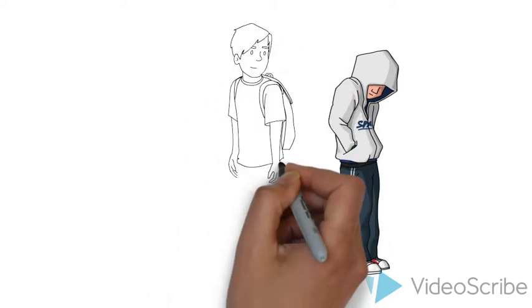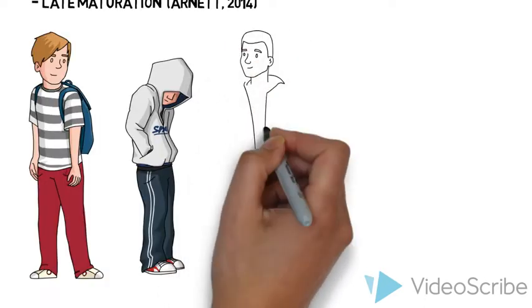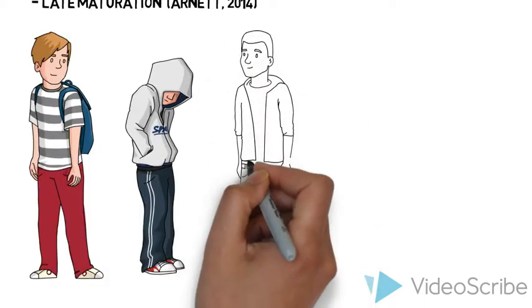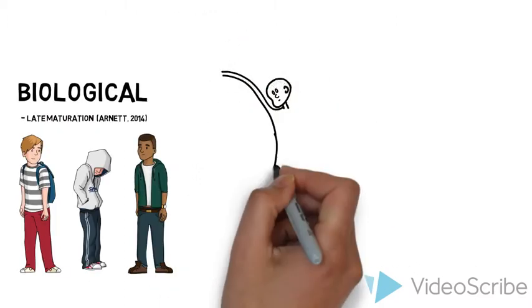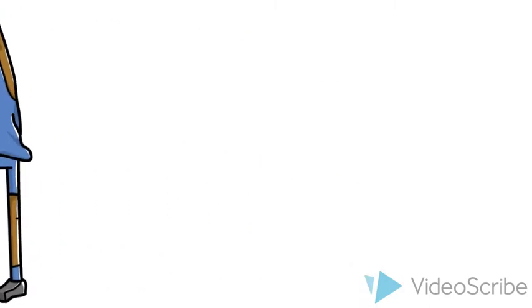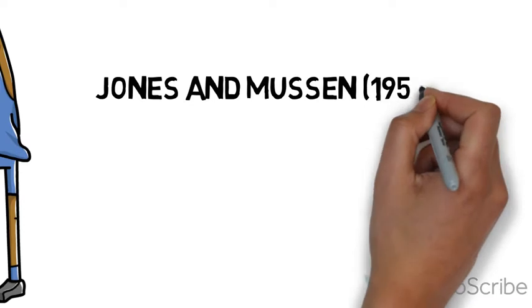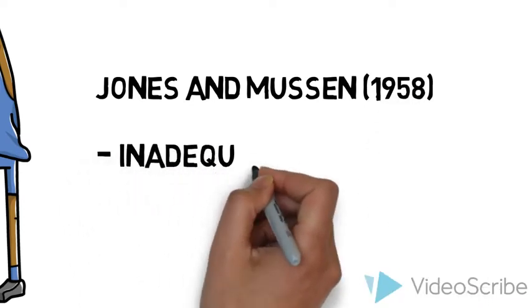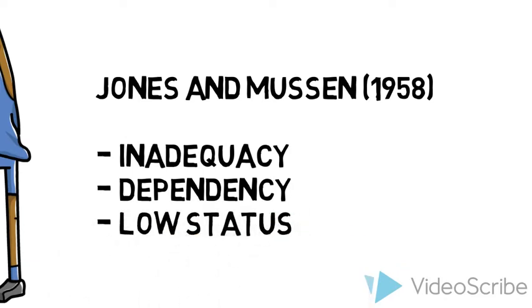This places Dylan at risk as there is a higher likelihood that Dylan will take on deviant behaviour due to feeling unfavourable amongst his peers in association to his physical appearance. Dylan is no longer being selected for leadership roles in basketball. Jones and Mussen recognize that late maturing males are more likely to reveal feelings of inadequacy, dependency and low status among peers compared to early maturing males who are seen more as leaders.